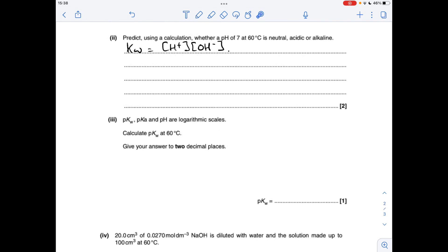Next part, we've got to use a calculation to determine whether a pH of 7 at 60 degrees C is neutral, acidic or alkaline. So I've already written up the Kw expression. Obviously we know Kw for 60 degrees C. We've got the pH, so we can get the H plus concentration from that. So we're going to find the OH minus concentration and compare it to the H plus concentration.